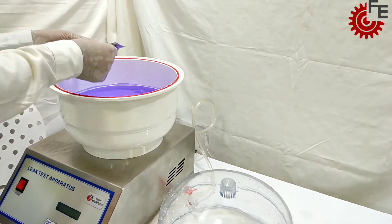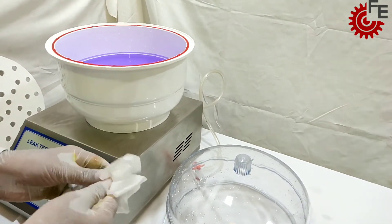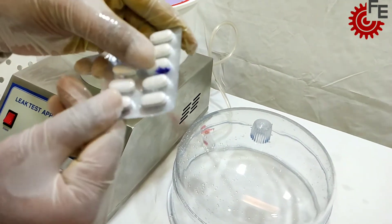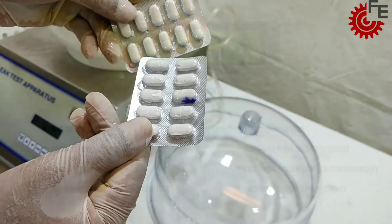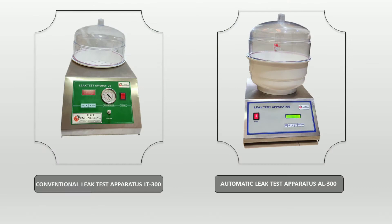At the end of the trial, penetration of liquid inside the specimen can be observed. Some key USPs are vacuum sustainability, simplified operation, qualification and validation support, and many others. Contact for more details.